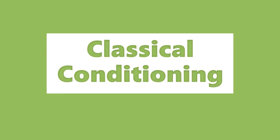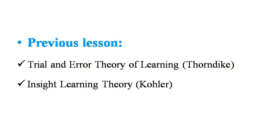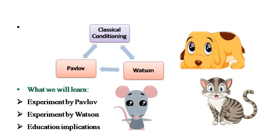Welcome back. In this video we will be learning classical conditioning. In our previous lessons on the theories of learning, we learned the trial and error theory by Thorndike, which was conducted on a cat, and the insight learning theory in which Kohler conducted an experiment on a chimpanzee named Sultan. In this theory, Pavlov and Watson conducted experiments on animals like dogs, rats, and cats, and came out with a new theory known as conditioned response theory, or simply learning by conditioning.